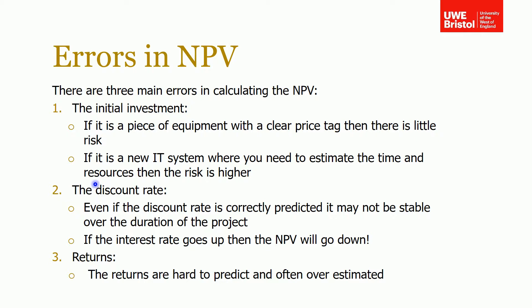The second source of risk is the discount rate. As mentioned, it's normally given to you, but even if correctly predicted, it may not be stable over the project's duration. You might assume 6% for five years, but it could be 6% for the first two years and then change to 3%. If the interest rate goes up, the NPV will go down, so correctly predicting the discount rate carries a high element of risk.